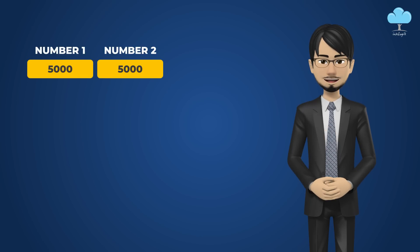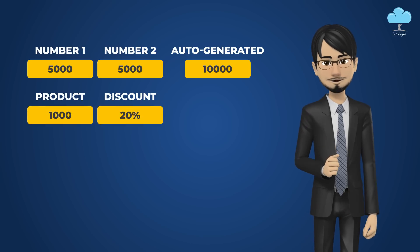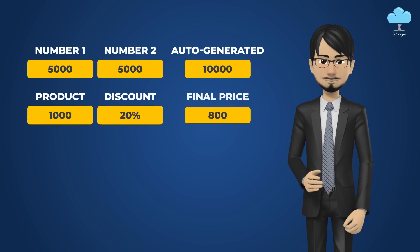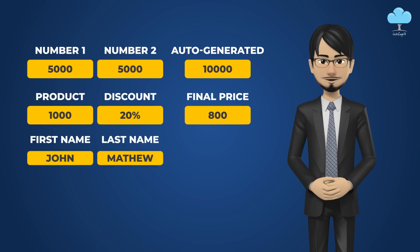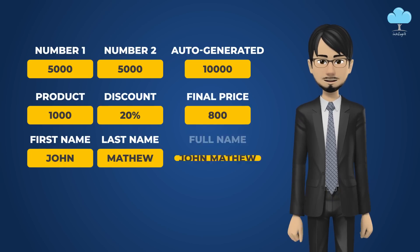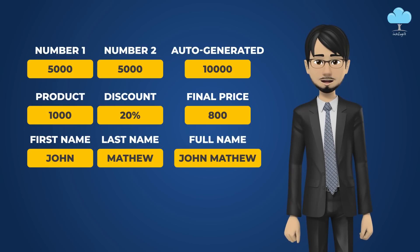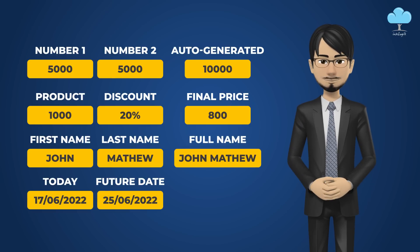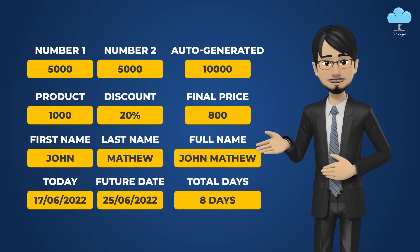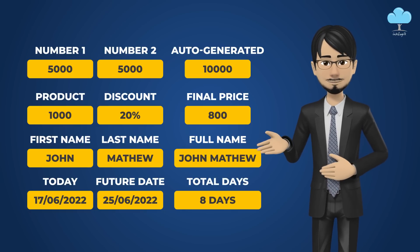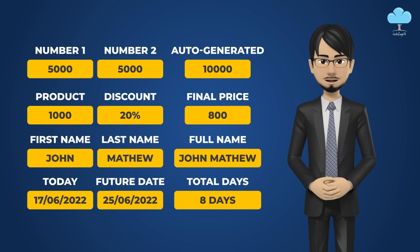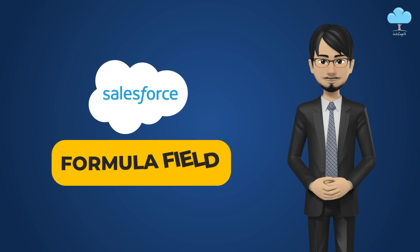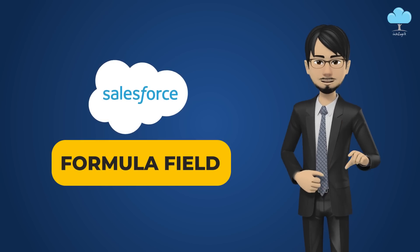This way we can perform calculations and give a final output automatically. We can calculate a discount and present it to the customer. We can connect two or three different types of text and generate new information like first name, last name, and middle name. We can also use the formula field for computing the difference between today's date and future dates, and more.